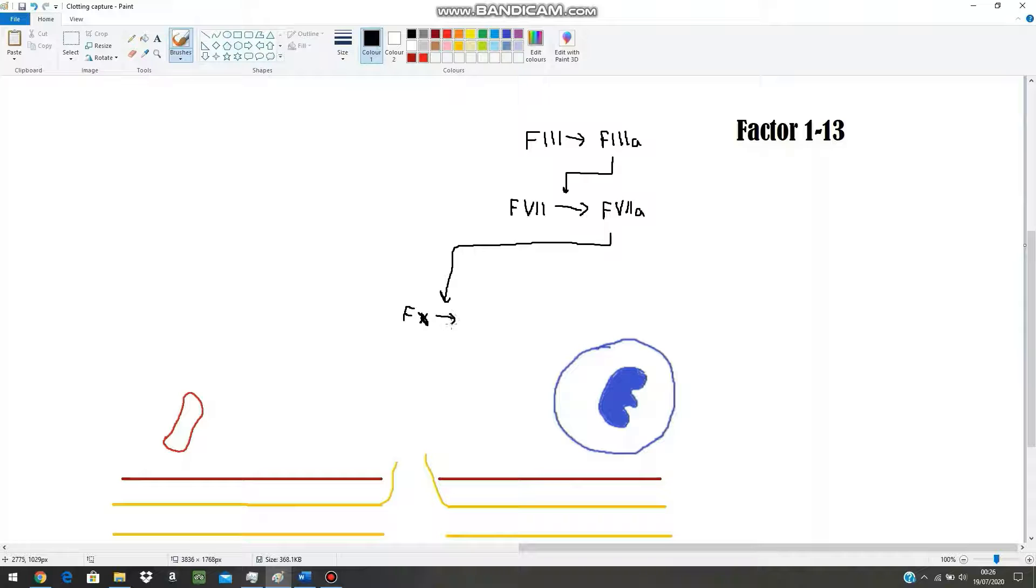This is where the whole reaction starts to snowball and everything converges on factor 10 because factor 10a can then help to convert prothrombin to thrombin. Now this thing, thrombin, is going to play a major part when we talk about the other pathway later on. But for now,